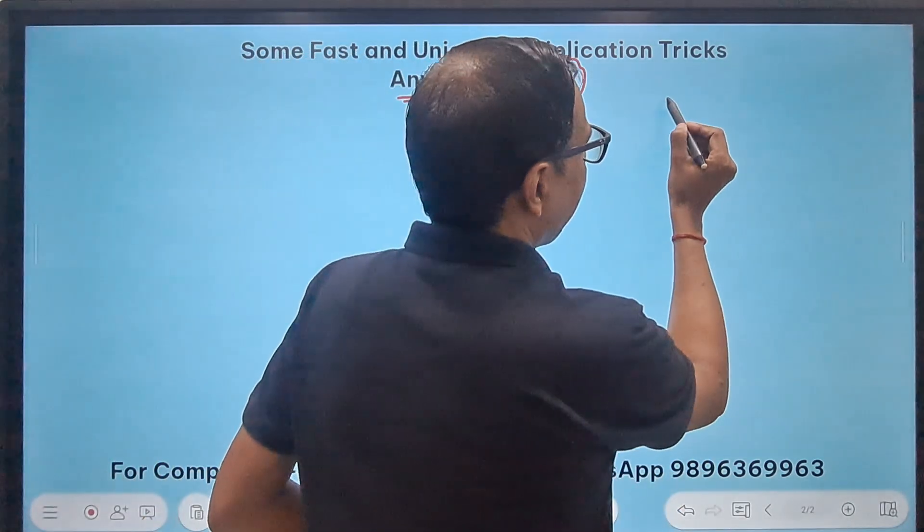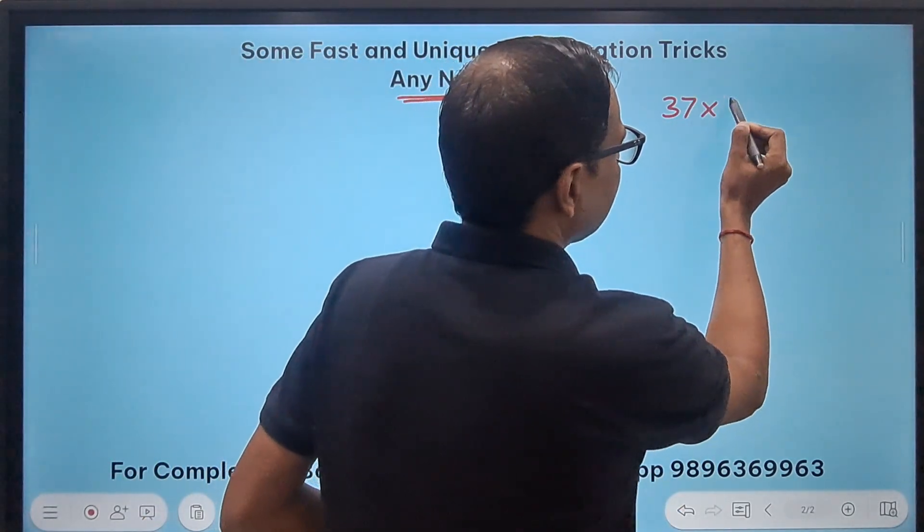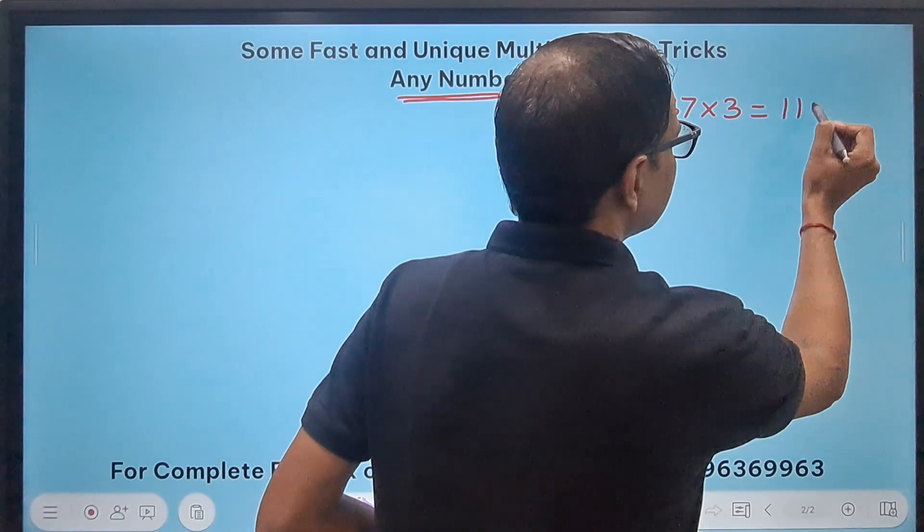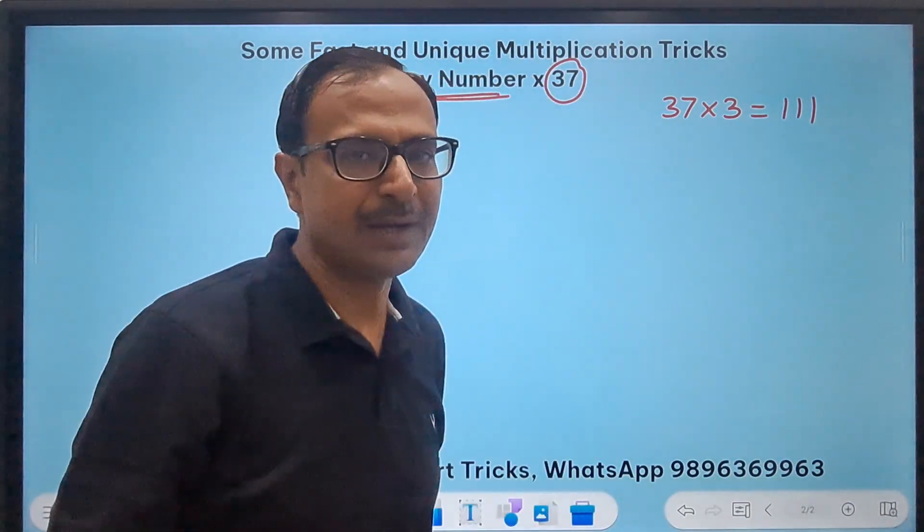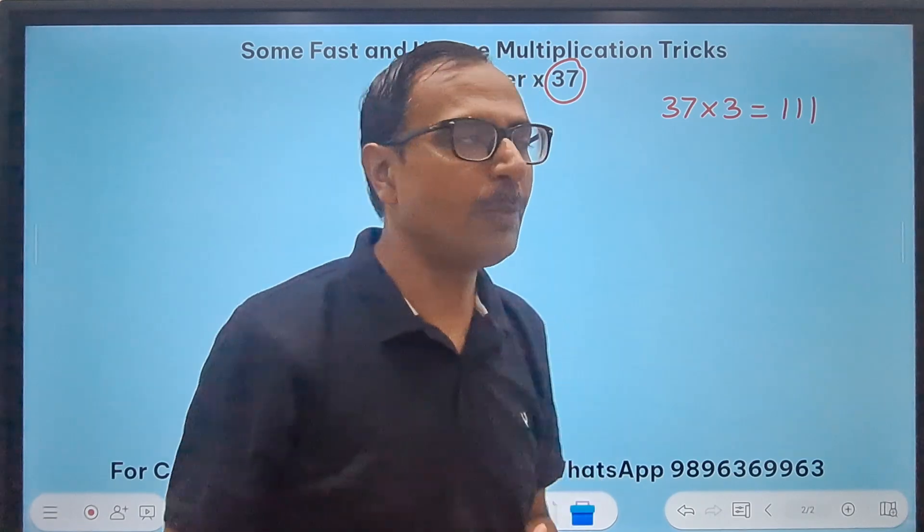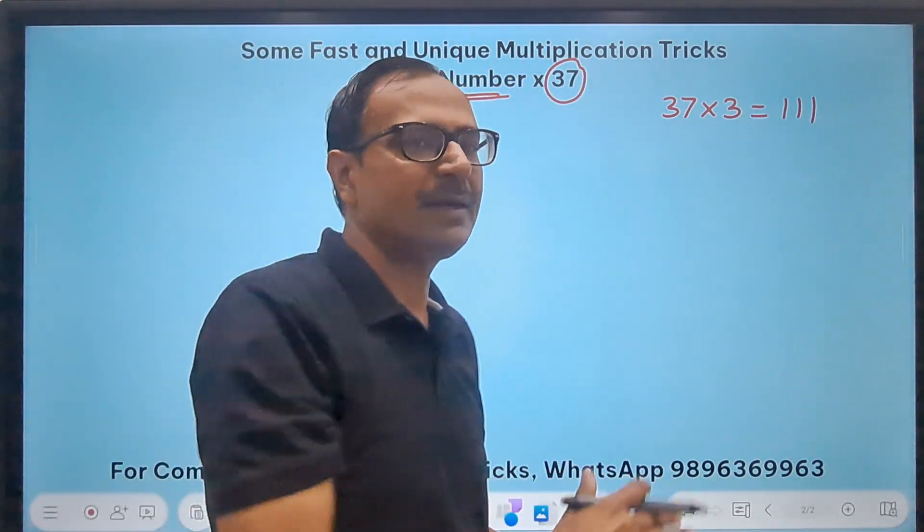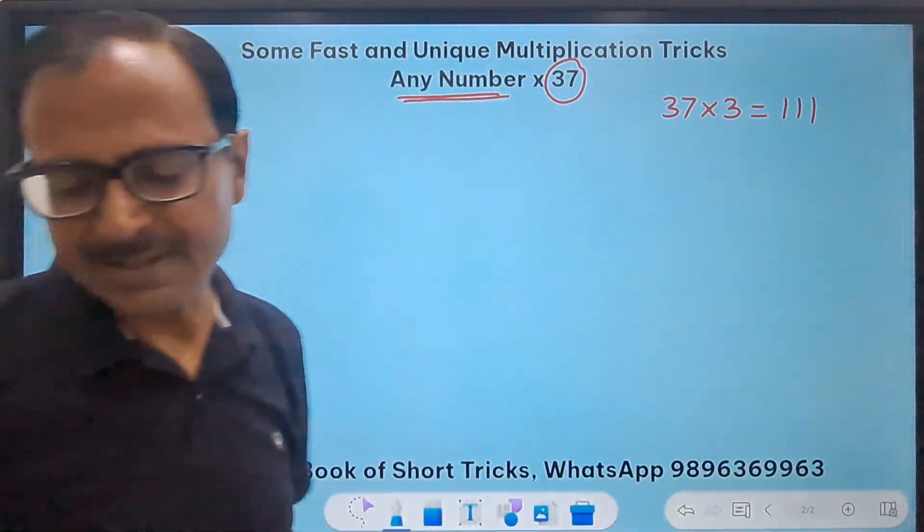See 37 if multiplied by 3 gives you a triplet that is triple 1 and that's what is the property which I am going to use to multiply any number by 37. So let's take an example.